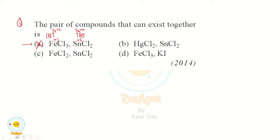In Option B, HgCl₂ has mercury in its highest oxidation state (+2), which can go to its lowest oxidation state (+1), meaning reduction occurs. In SnCl₂, tin is in its lowest oxidation state (+2) and can go to its highest oxidation state (+4), meaning oxidation occurs. Therefore, HgCl₂ and SnCl₂ react with each other and cannot exist together.